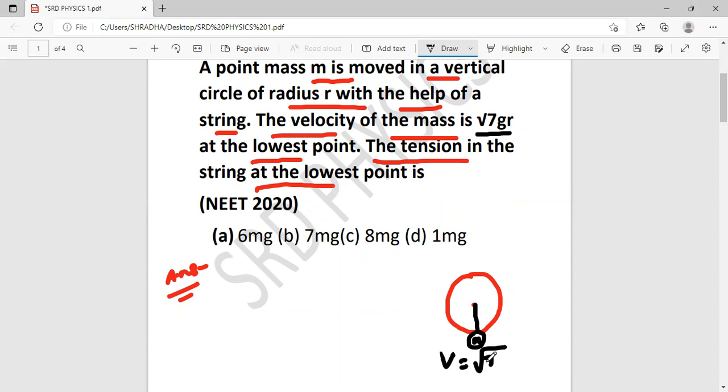For a body moving in a vertical circle, the minimum velocity at the lowest point is √(5gr). Here the velocity is √(7gr), which is greater than √(5gr), so that means...